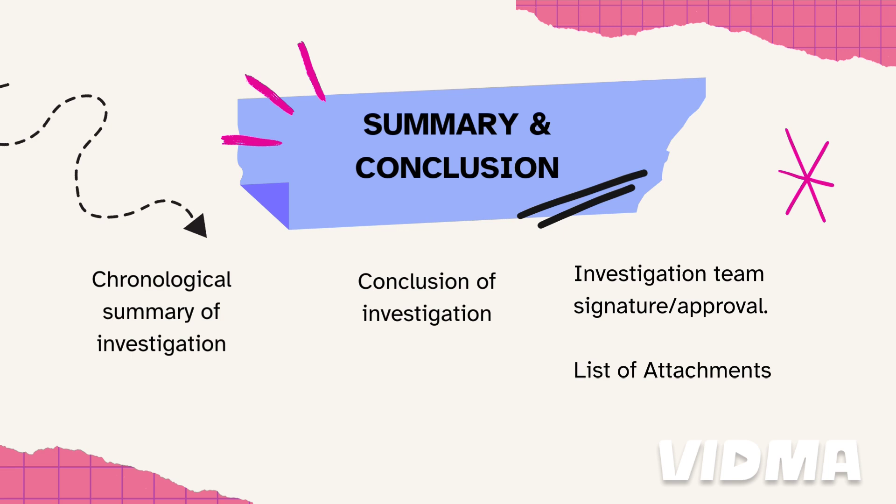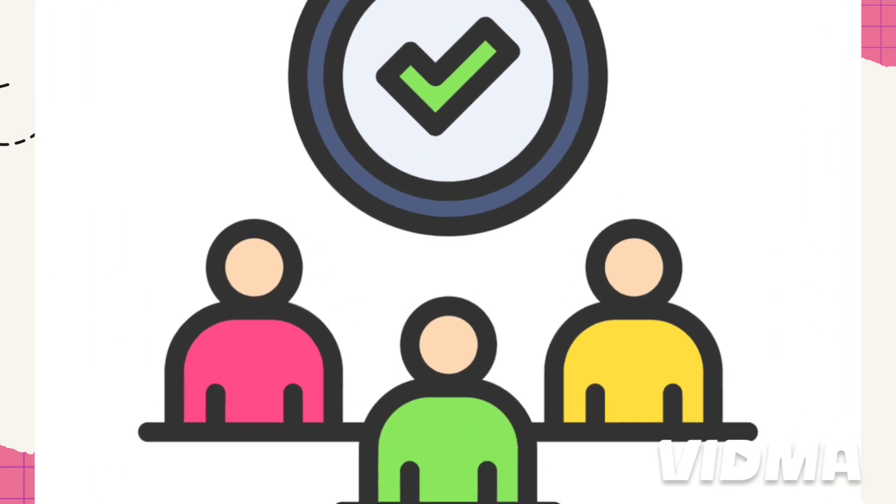Then, for the team approval and list of annexures, include a brief description of the list of attachments for easy understanding of the annexures and details, and take the approval of the investigation team.